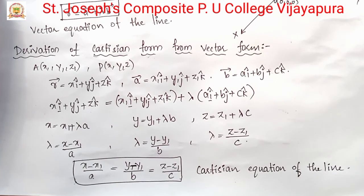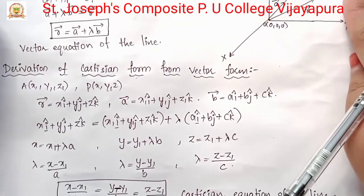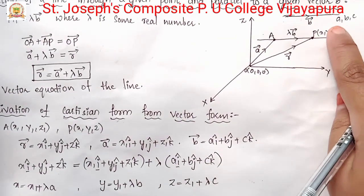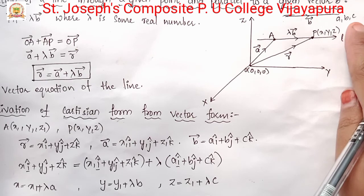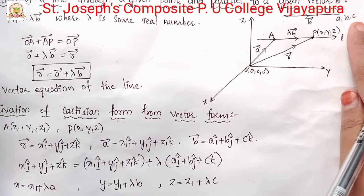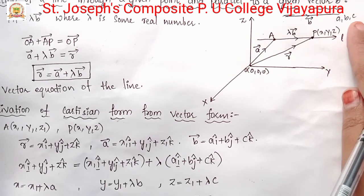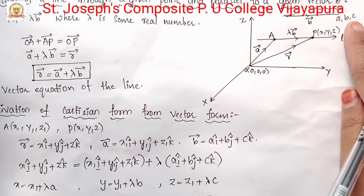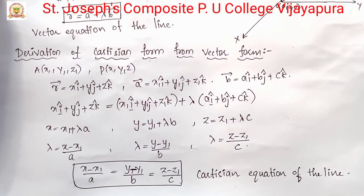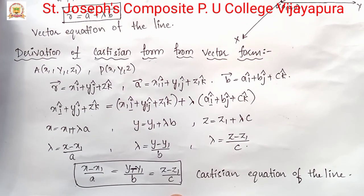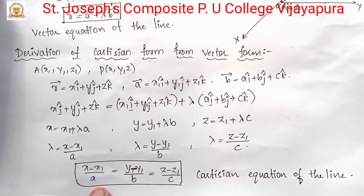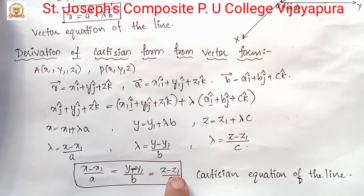Suppose that instead of direction ratios a, b, c, the direction cosines l, m, n of the line are given. Then the Cartesian equation of the line becomes: (x minus x1)/l equals (y minus y1)/m equals (z minus z1)/n.